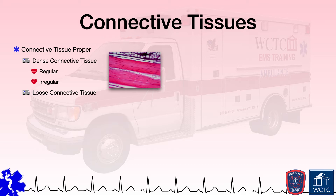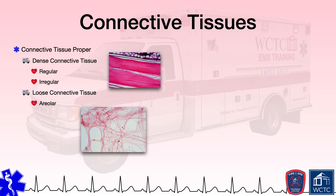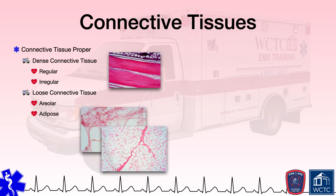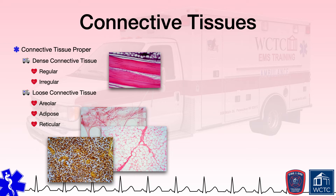Loose connective tissues have fibers that are loosely organized, leaving large spaces in between. Areolar tissue has cells and fibers distributed in a random, web-like fashion and it binds skin to underlying organs, fills spaces between muscle fibers, holds body fluids, supports organs in the abdominal cavity, and surrounds blood and lymph vessels. Adipose tissue predominantly consists of fat cells with little extracellular matrix and can be found beneath the skin, between muscles, around the kidneys, behind the eyes, on the surface of the heart, around some of the joints, and in some abdominal membranes. In addition to storing energy in the form of fat, adipose tissue also provides cushioning for nearby body parts. Reticular loose connective tissue is a mesh-like supportive tissue that provides a framework for soft internal organs such as the spleen and liver.